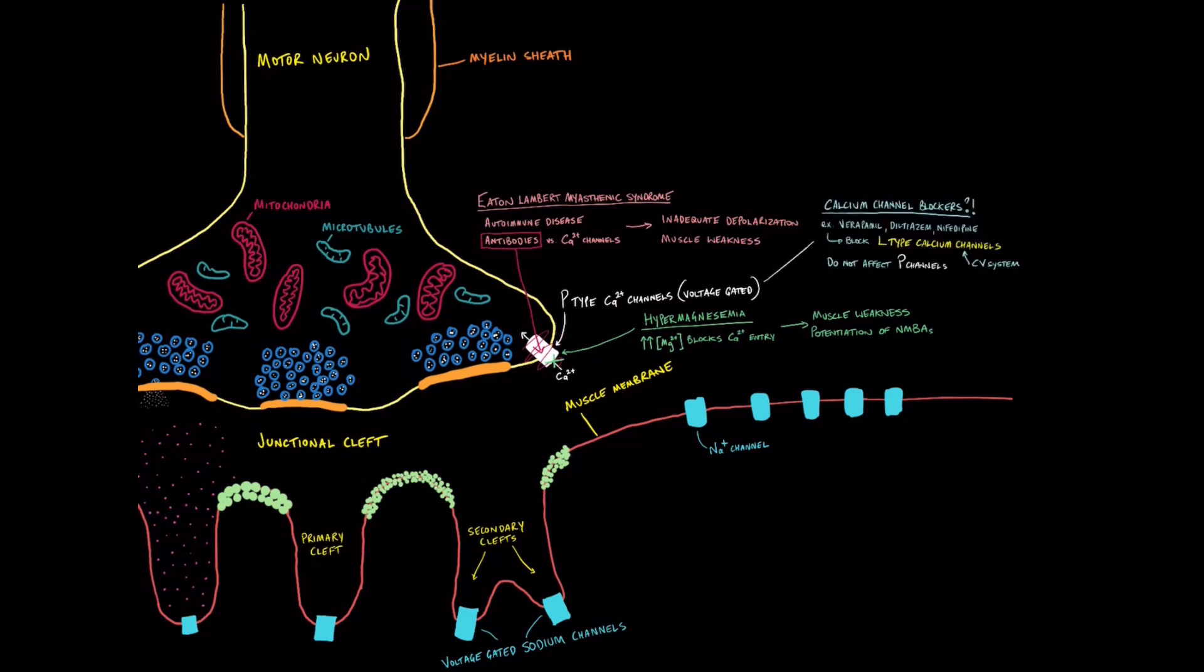So what's the impact of calcium channel blockers on these calcium channels? It would be intuitive to think that they would cause problems, right? So, and this is where the different subtypes of calcium channels comes in. So verapamil, diltiazem, nifedipine, all these other calcium channel blockers, they interact mostly with the L-type calcium channels and those are the ones seen in the cardiovascular system